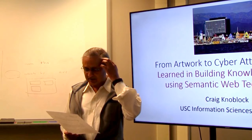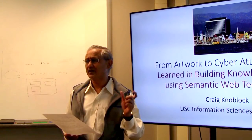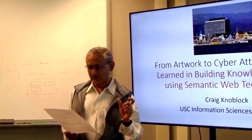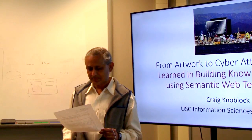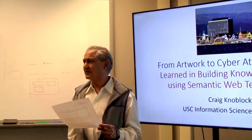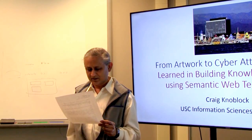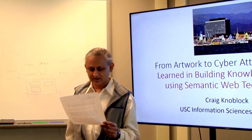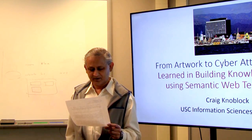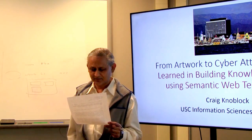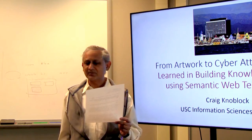Craig is a professor of computer science and spatial sciences at USC. He's director of one of the divisions within ISI — the Intelligent Systems Division. He has worked extensively on various topics including schema, project alignment, and extracting data from the web. He is a Fellow of AAAI and has been a Fellow well before I was appointed. He is also a trustee of ISCAI.